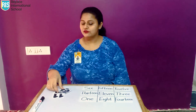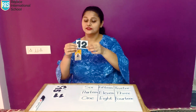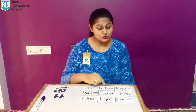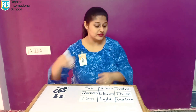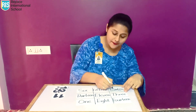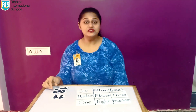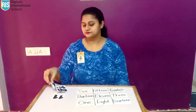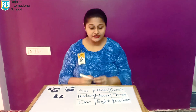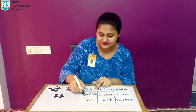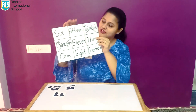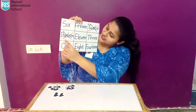I will pick a number from the number flashcards. Number 12. Now I will search number name 12 from the ticket. Here is number name 12, so I will cross out number name 12 using a marker. Now I will pick one more number. Number 13. I will search number 13 from the ticket. Here it is. I have crossed number name 12 and 13.